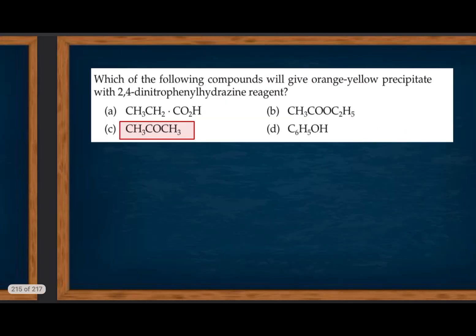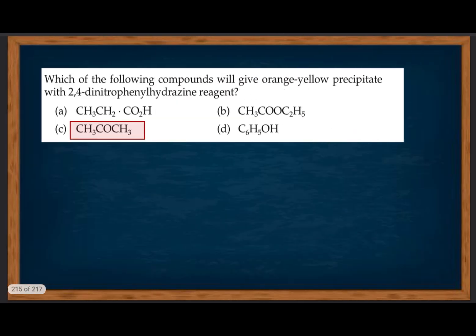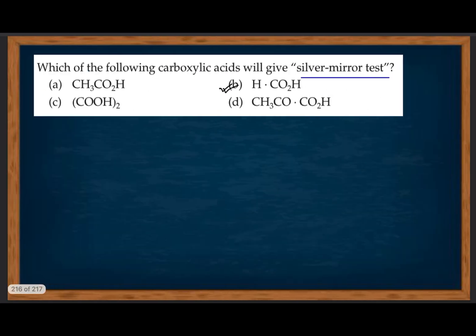Which of the following compounds will give an orange-yellow precipitate with 2,4-dinitrophenylhydrazine (2,4-DNPH)? Carbonyl compounds (aldehydes and ketones) give this test. This is an important PYQ — previous year question.